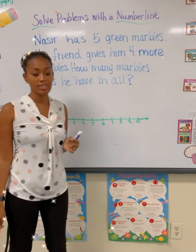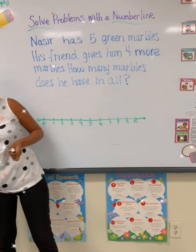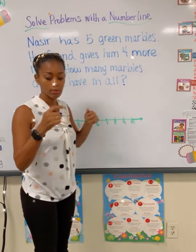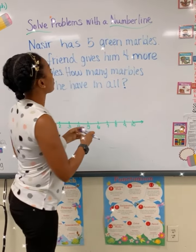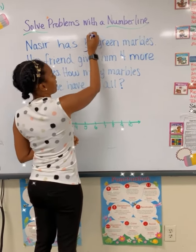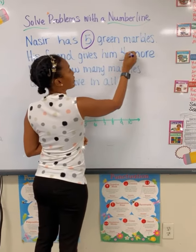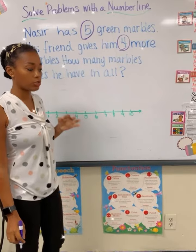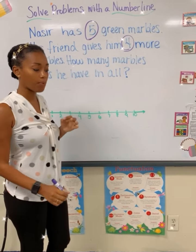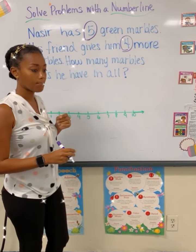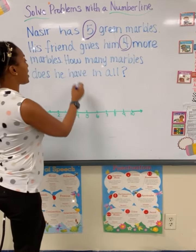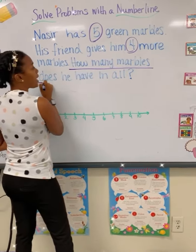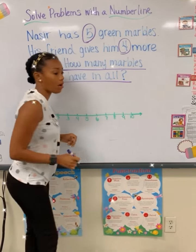What is the first thing that I do when I'm going to solve a math word problem? Circle the numbers that you're working with. I'm going to circle the numbers that I'm working with. I'm working with the number five and I'm working with the number four. What is the next thing I need to do? Underline the question that they're asking. This question is asking: how many marbles does he have in all?